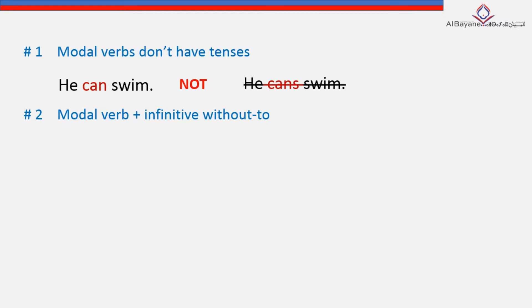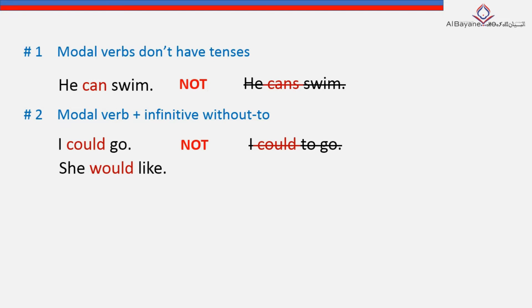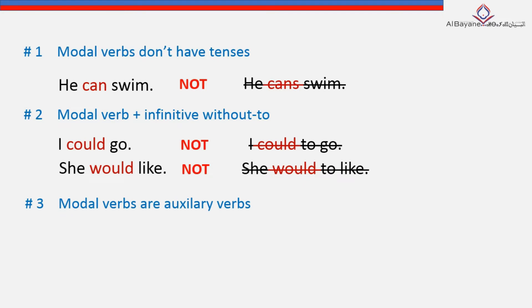The second rule is that you always use a modal verb with a main verb, and the main verb that follows is always in the bare infinitive form — without 'to.' Such as 'I could go,' not 'I could to go,' or 'she would like,' not 'she would to like.' And the last rule is that modal verbs are auxiliary verbs, as mentioned before.